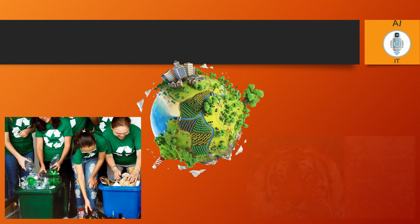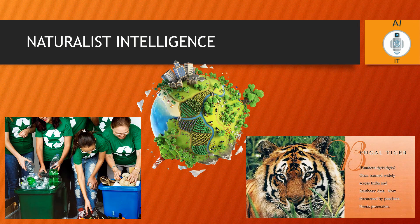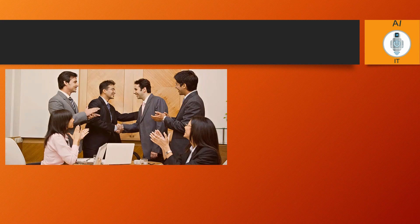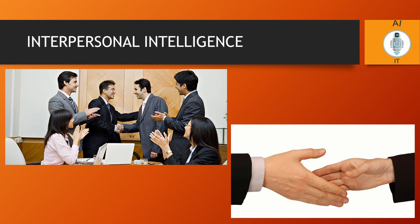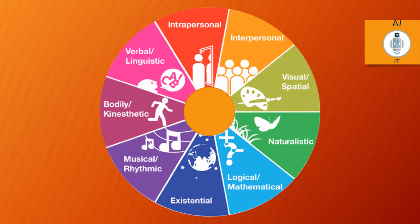The eighth type of intelligence is the ability to recognize and categorize plants, animals, and other objects in nature — this is naturalist intelligence. Examples include landscape architects and gardeners. The last type is interpersonal intelligence: the ability to communicate with others by understanding other people's feelings and responding appropriately. Examples include salesmen and counselors. All human beings have nine types of intelligences, but at different levels.